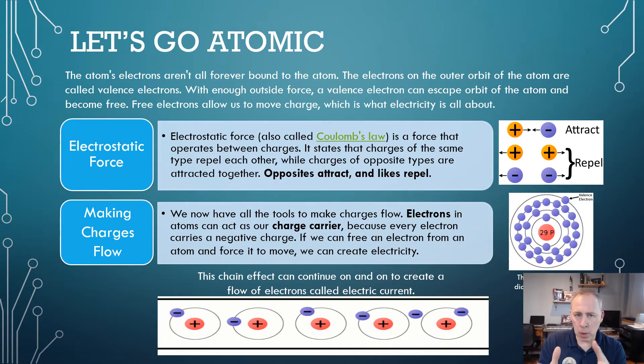So electrostatic force, also called Coulomb's Law, is a force that operates between charges. It states that a charge of the same type will repel, while charges of opposite types will attract. Opposites attract and likes repel. If you notice on the chart on the side, there's an example of electrons, positive and negative attracting, and a positive and positive, or a negative and negative repelling. So making charges flow. We now have the tools we need to make a charge flow. Electrons in atoms can act as our charge carrier, because every electron carries a negative charge. If we can free an electron from an atom and force it to move, we can essentially create electricity. So this chain effect can continue on and on to create a flow of electricity called electric current.